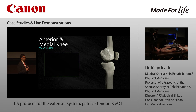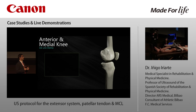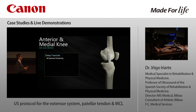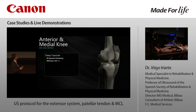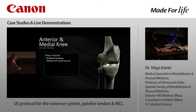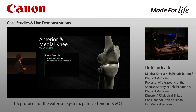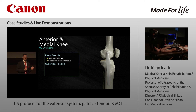Regarding the medial side of the knee, the most important structure when performing ultrasound is the medial collateral ligament. It has two fascicles. The deep fascicle is a small fascicle representing a capsular thickening with a very close relationship with the medial meniscus. It has two components: the meniscofemoral component and the meniscotibial component.